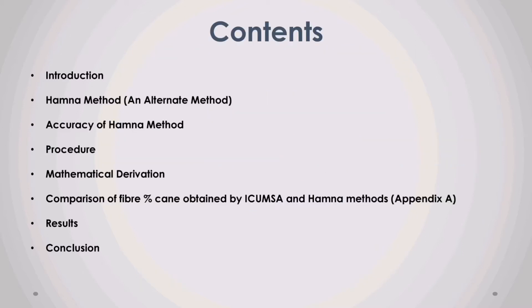Contents for today's discussion are: introduction to the topic, Hamner method as an alternate method, accuracy of Hamner method, procedure, mathematical derivation, comparison of fiber percent cane obtained by ICUMSA and Hamner methods, results, and conclusion.